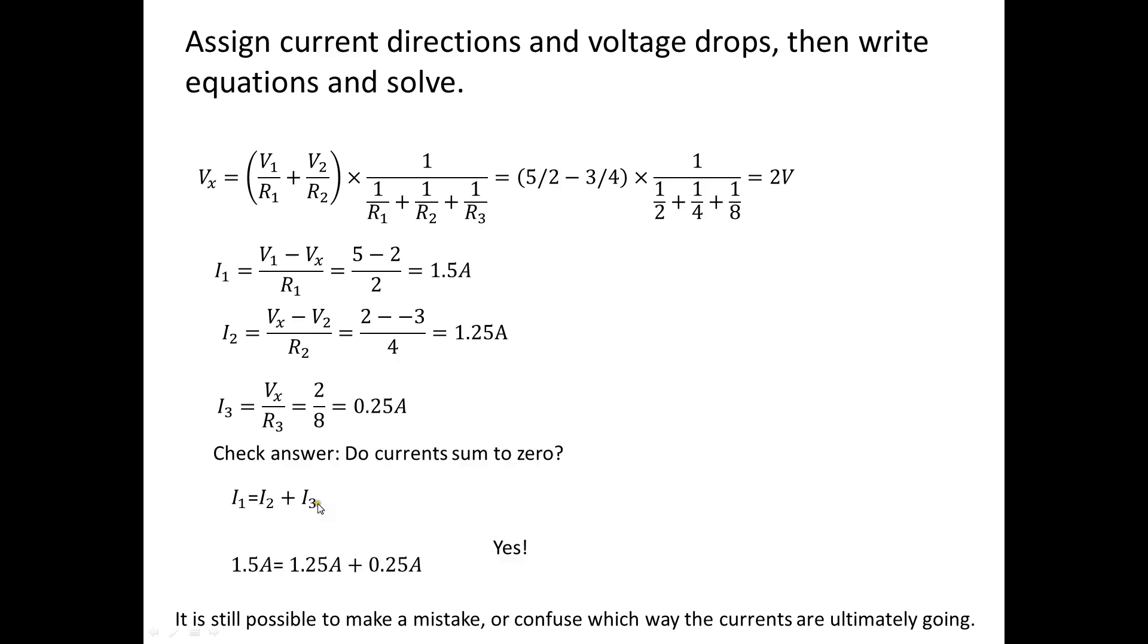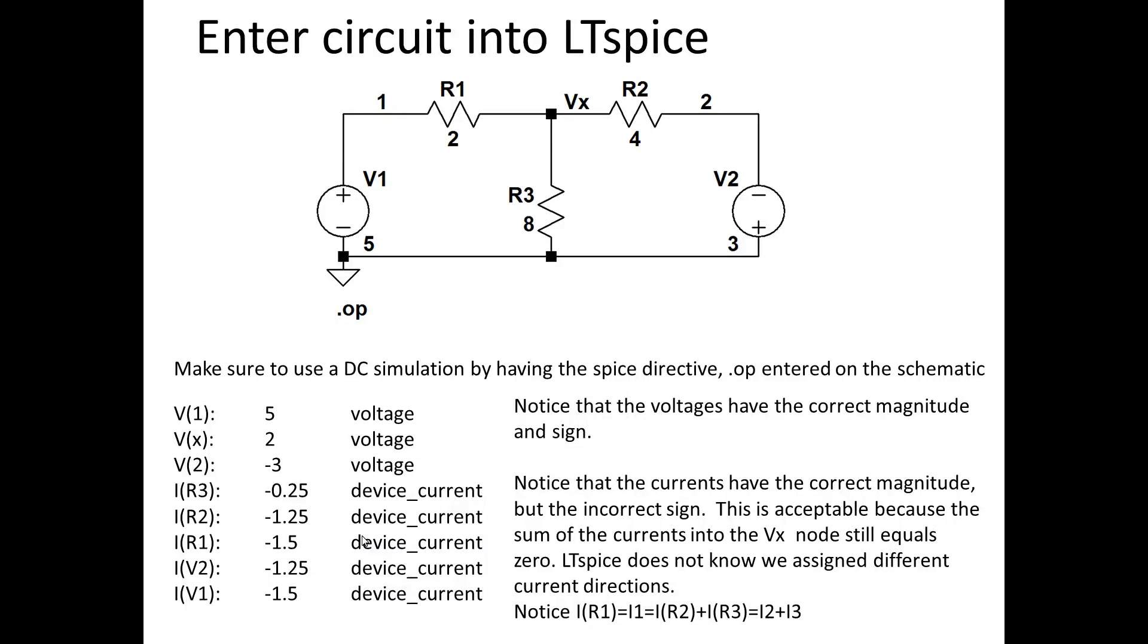I1 should equal I2 plus I3 and it does. So this is a valid solution but still mistakes can be made. I make a lot of mathematical errors myself. I could have made a mistake in the checking because I kind of knew what I thought the answer would be. I could have made a mistake up here and then checked it wrong.